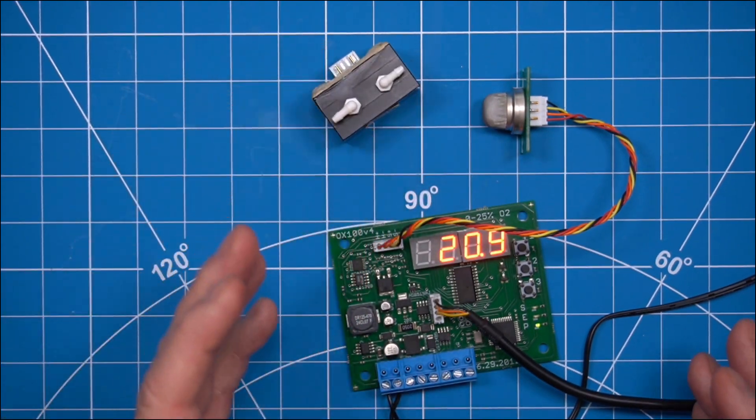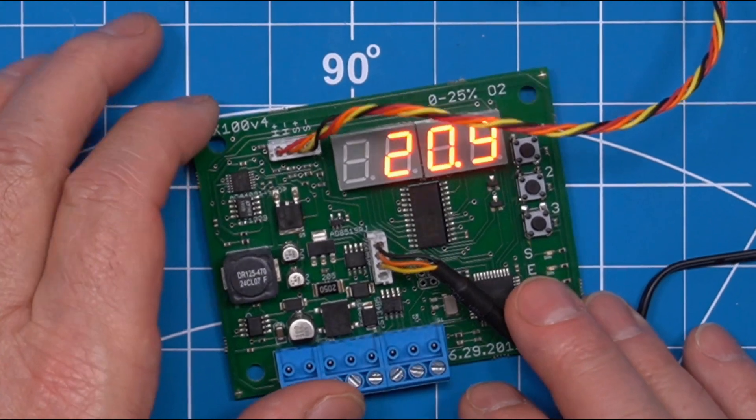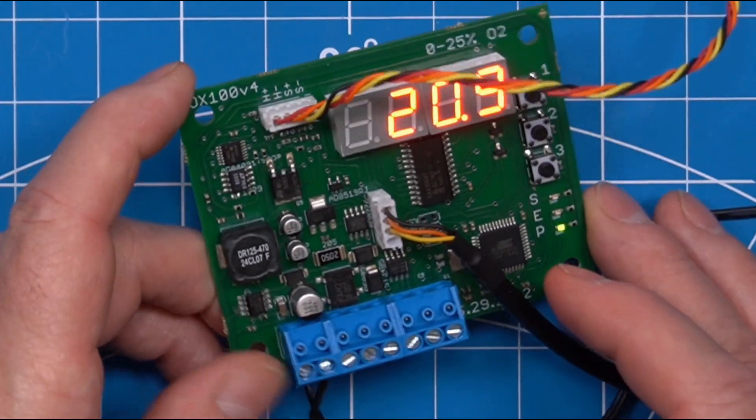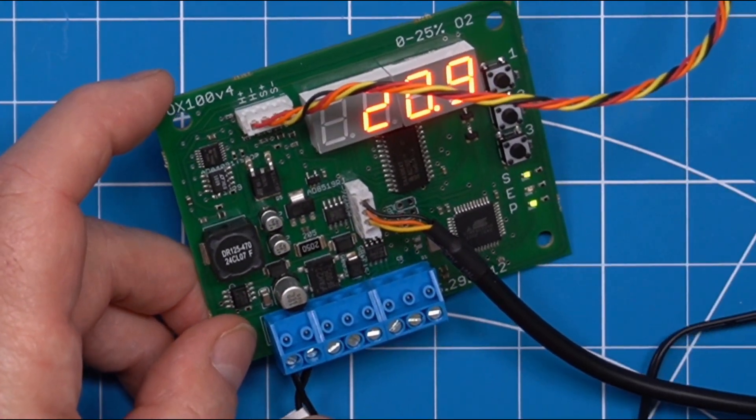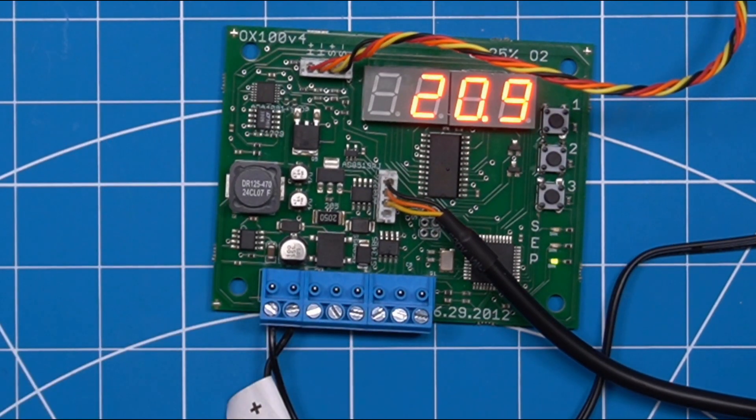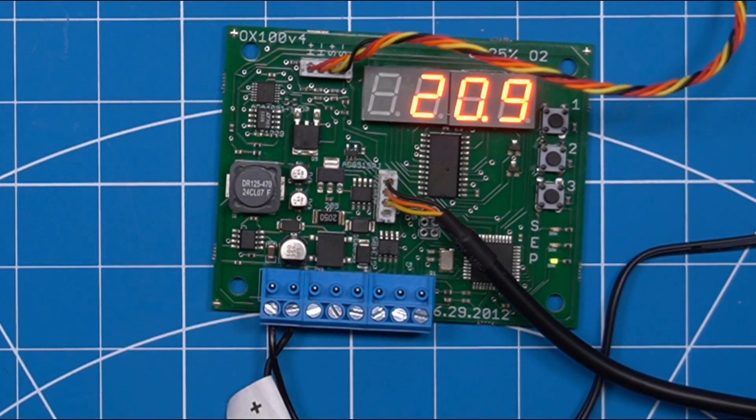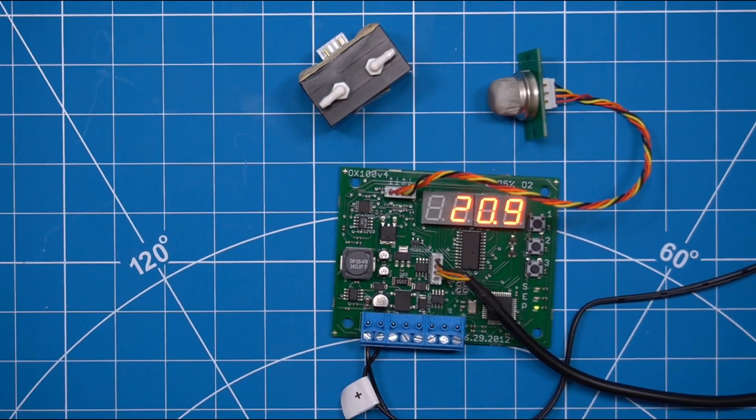Either way, any of the configurations is controlled by this sensor board. The power comes in here, it provides a 4 to 20 milliamp signal that you can use for other distant pieces of automation.